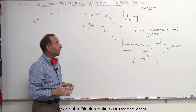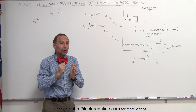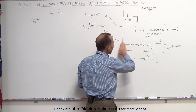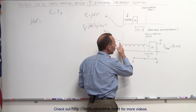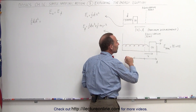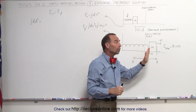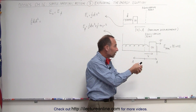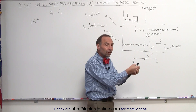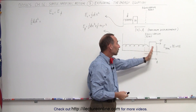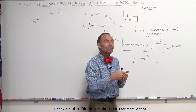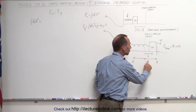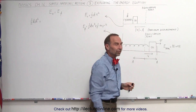Now we'll let go of the block, and the spring with all that stored energy pushes against the block and begins to accelerate it away from the initial position, all the way to the equilibrium point. Once it passes the equilibrium point, the block will continue to move but will slow down because the spring is beginning to pull on the block, and the block will come to a complete stop when it reaches the maximum displacement on the other side, where x equals displacement in the positive direction.